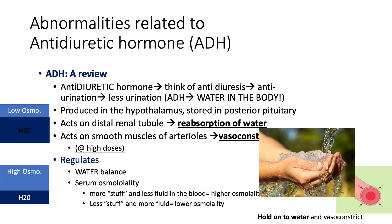Looking at ADH itself, it's produced in the brain in the hypothalamus and stored in the posterior pituitary. When ADH is released, it activates our kidneys — specifically the distal renal tubule. If we're talking about urination and water in or out of our body, we should probably act on the kidney. When ADH is released, it acts on that distal renal tubule and causes reabsorption of water, which explains our 'water in the body' concept.